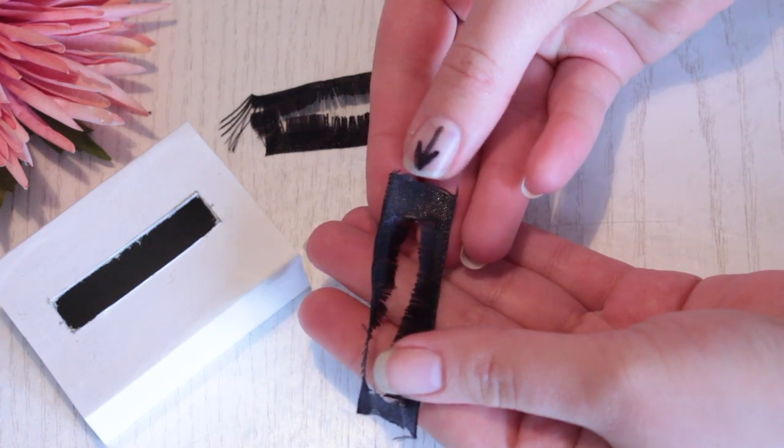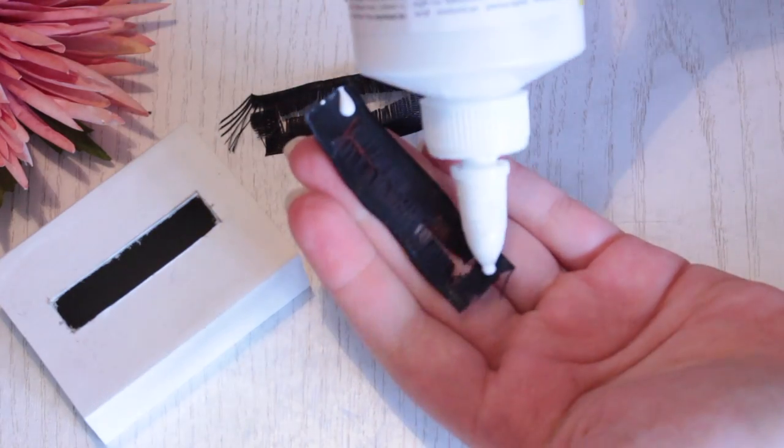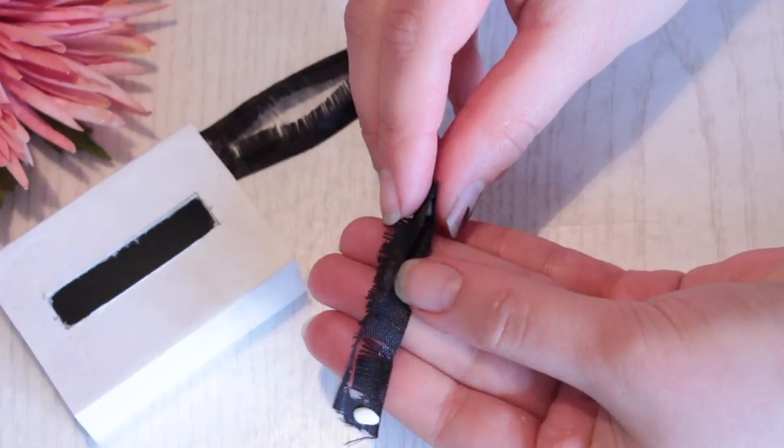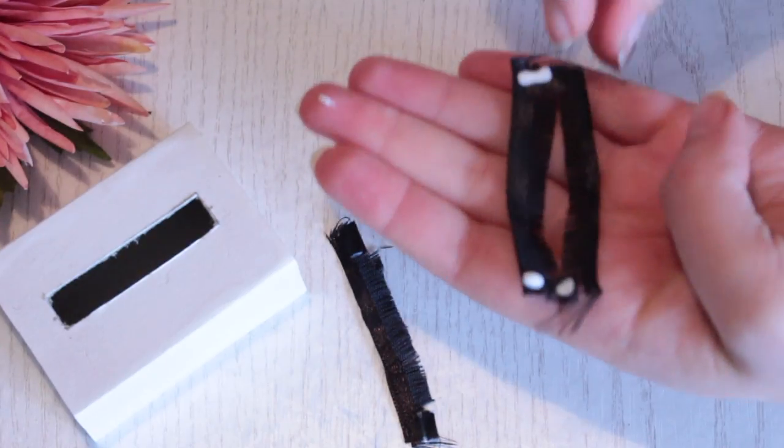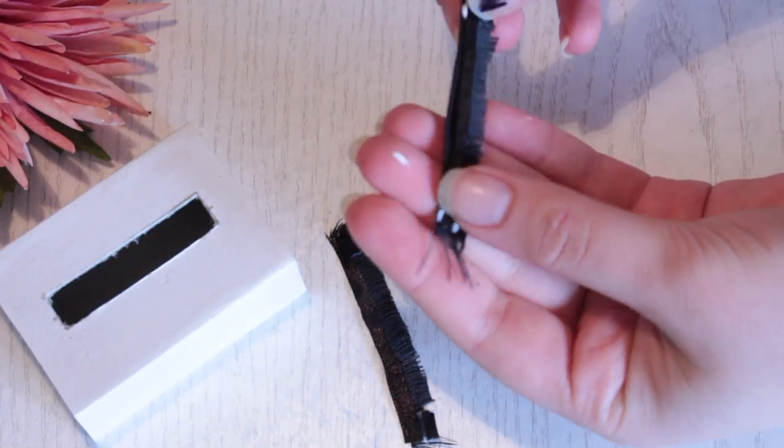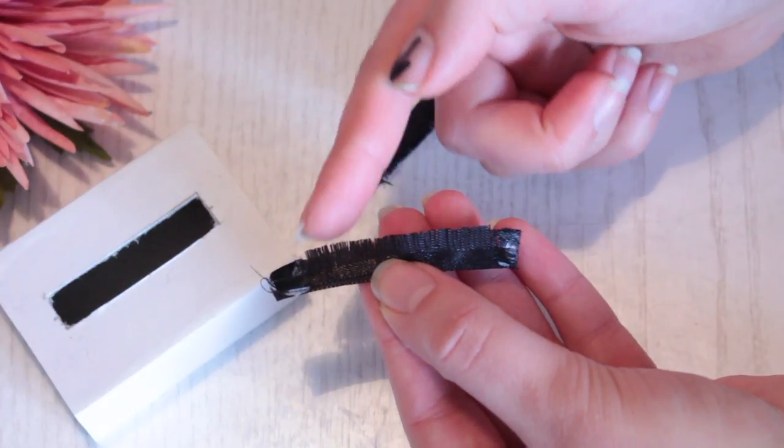Now we need to close them up, so put some glue on the ends here and fold it in half. And of course, do this with the other one as well. Now this is what you should end up with.